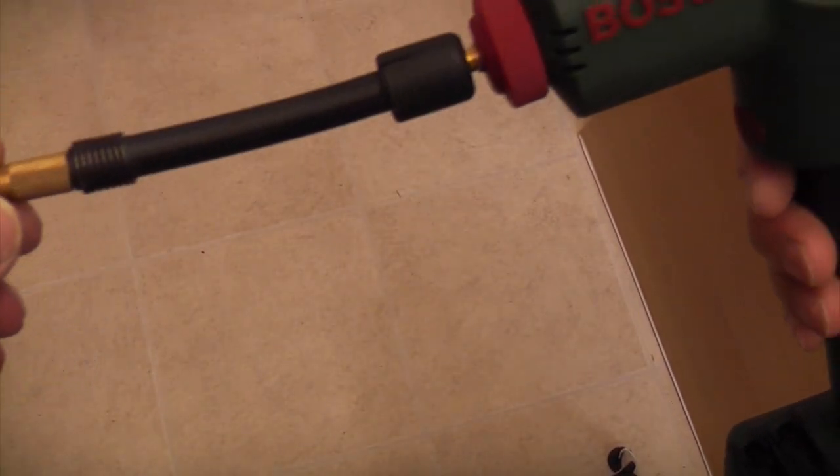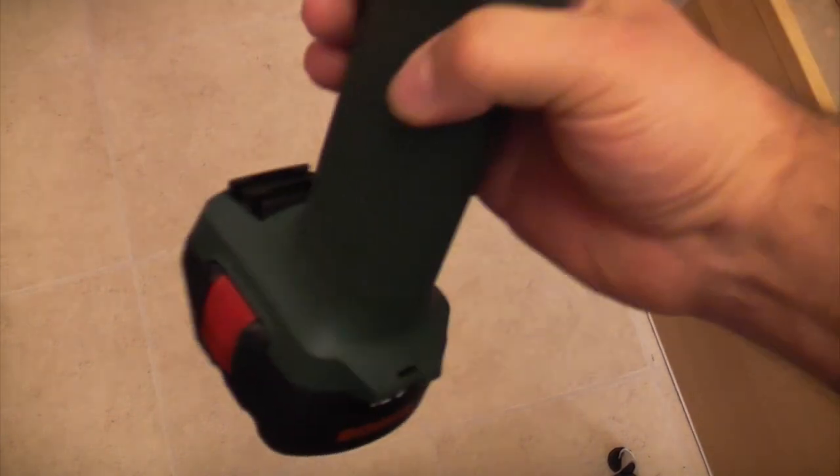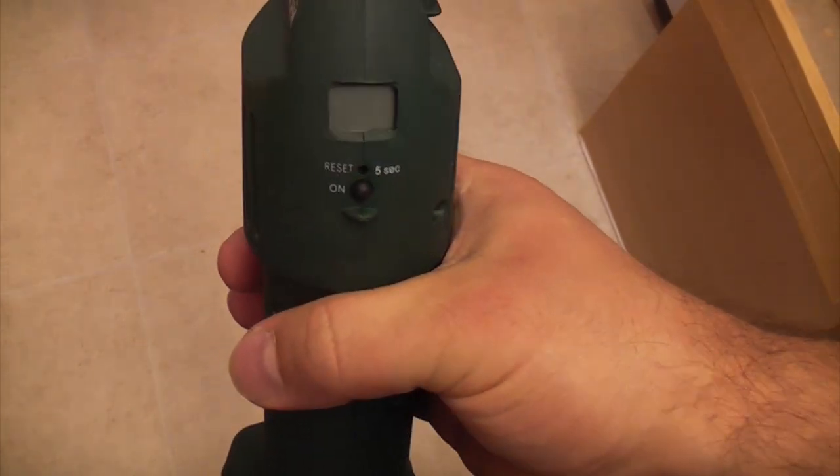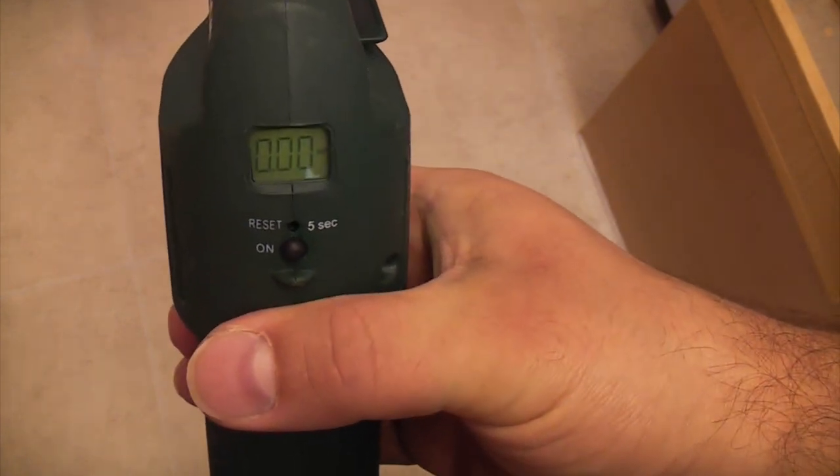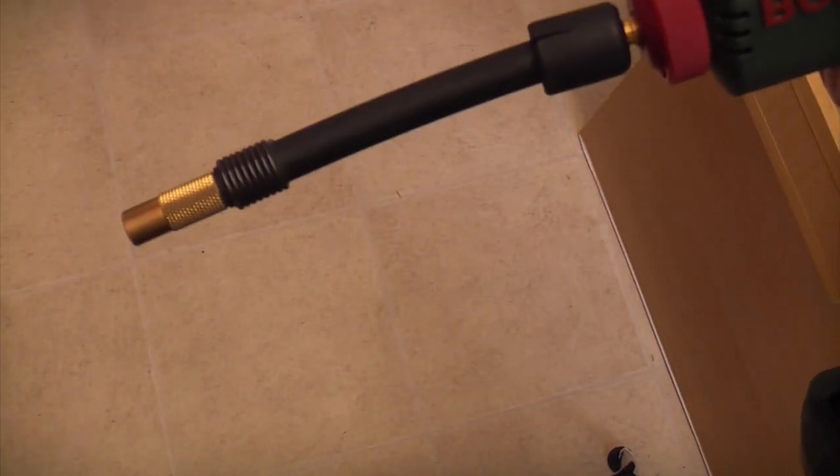But I'm going to be using this, which is a Bosch PAG12V cordless pump, and it also has a gauge on the back there which tells you the actual pressure. I'm going to use this to recharge the expansion vessel.